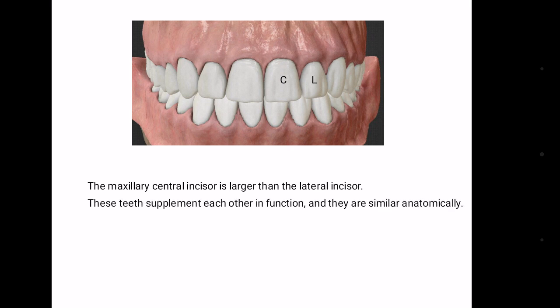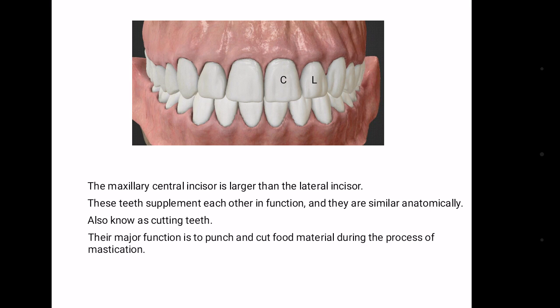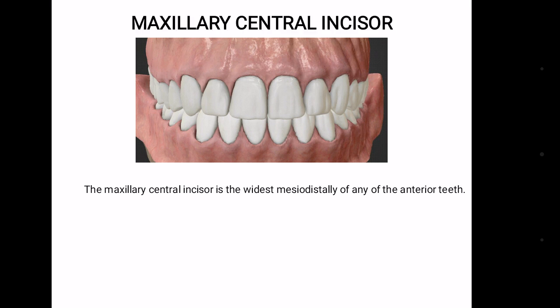The teeth supplement each other in function and they are similar anatomically. They are also called cutting teeth as their function is to punch and cut food material during the process of mastication. These teeth have incisor ridges instead of cusps and these ridges help them in cutting the food material.